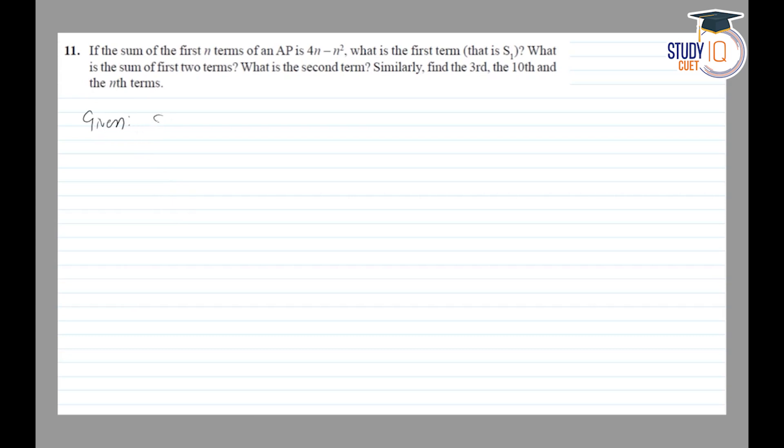Given, sn is equal to 4n minus n square. First term, that is a, is equal to s1. So putting 1 in place of n, I get 4 minus 1, so that is 3.